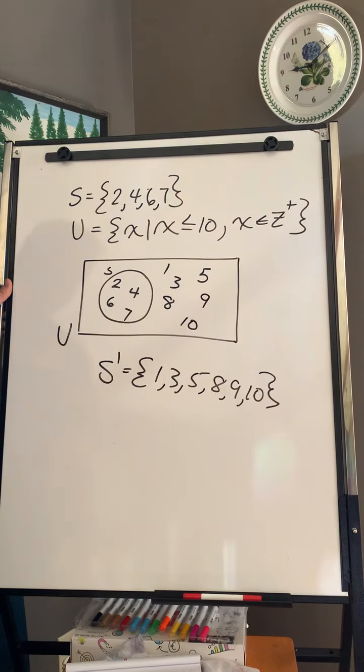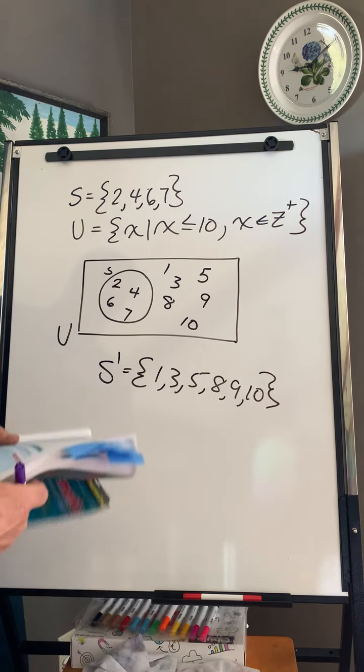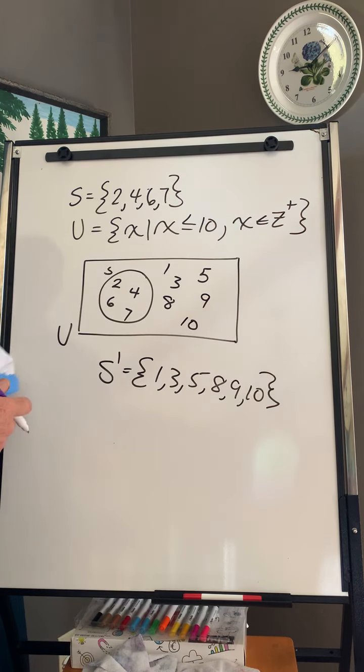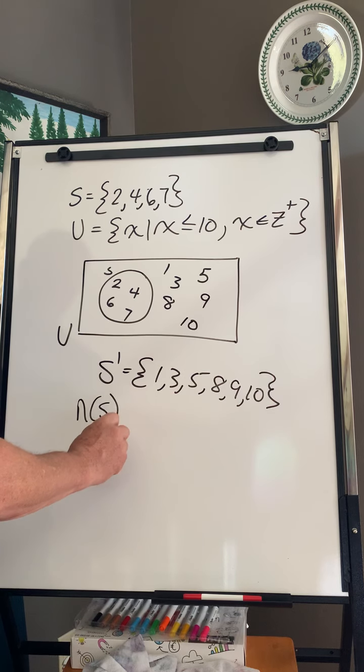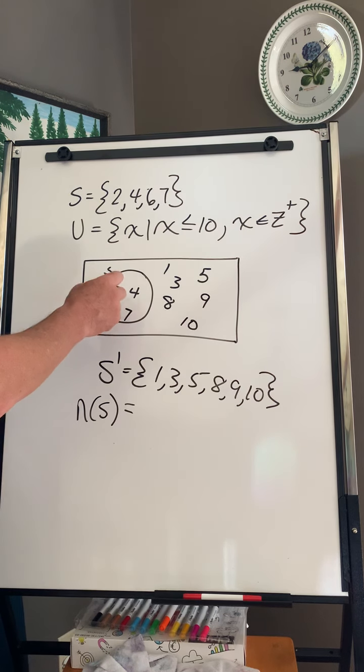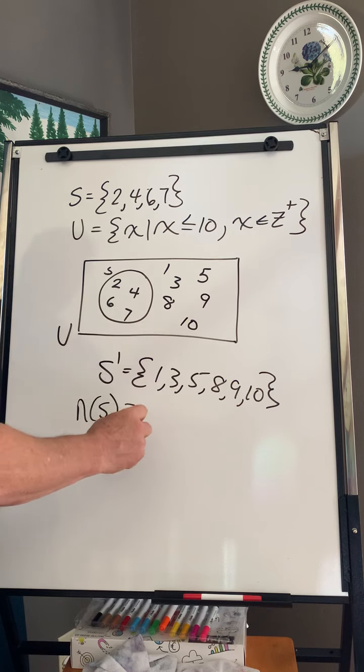Now, then it asks us a few other questions, which are basically pretty straightforward. So we're going to find the number of elements in set S. 1, 2, 3, 4. So when I have this, this means the number of elements in the set S.